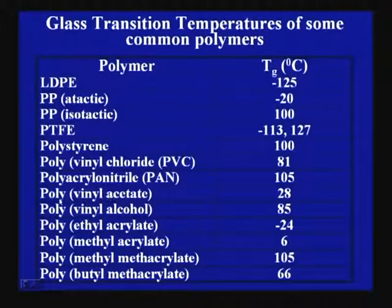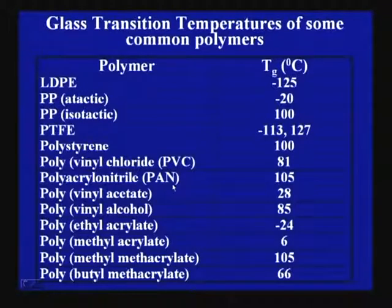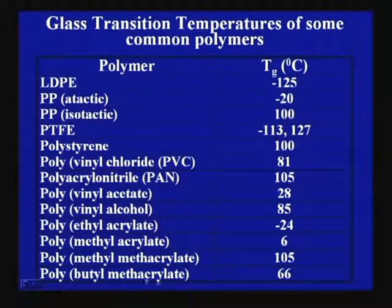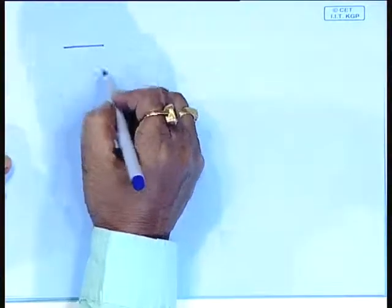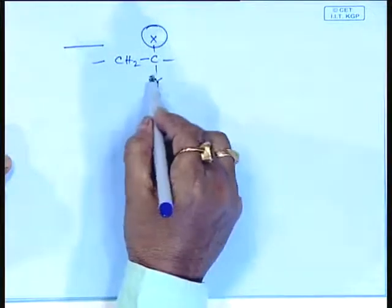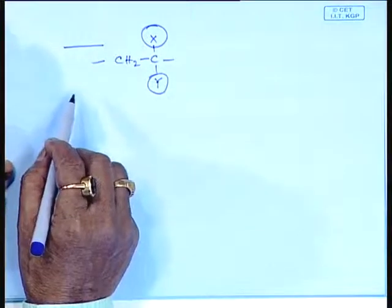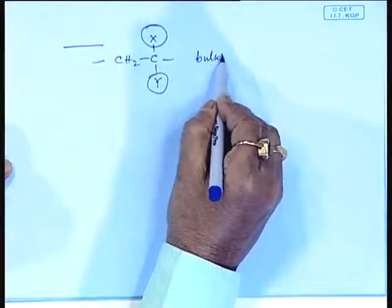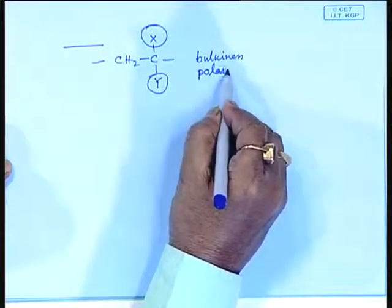Looking at other polymers — PVC, polyacrylonitrile — the substituent at the carbon atom: chlorine, nitrile group (CN), acetate group, alcohol group, acrylate group, ester group, methyl acrylate, methyl and methacrylate group, butyl methacrylate group — you can easily correlate. The substitutions on the polymer chain alter the glass transition values depending on their bulkiness and their polarity.